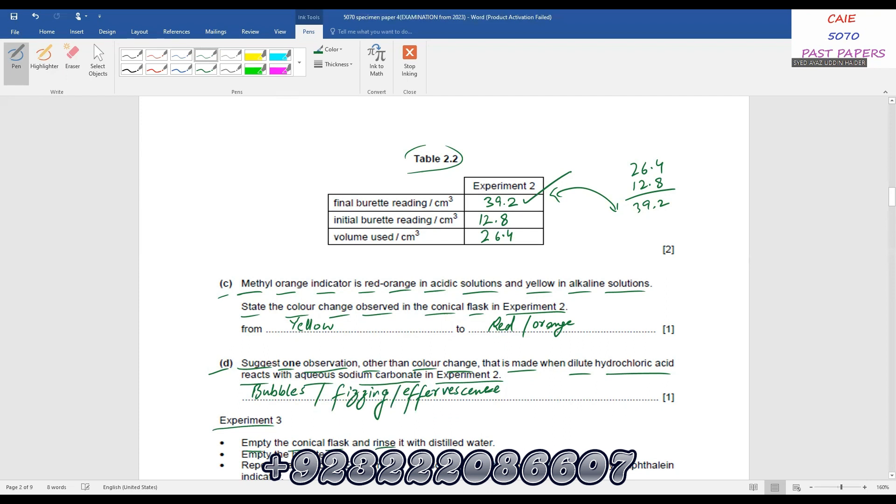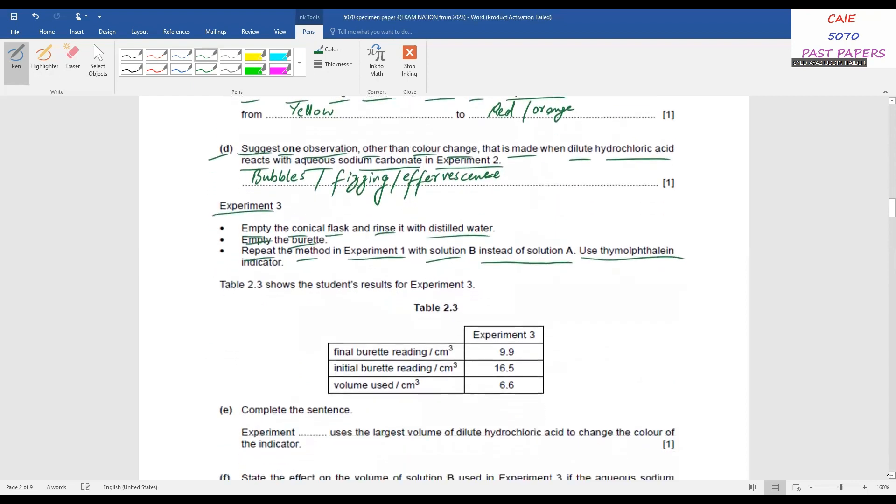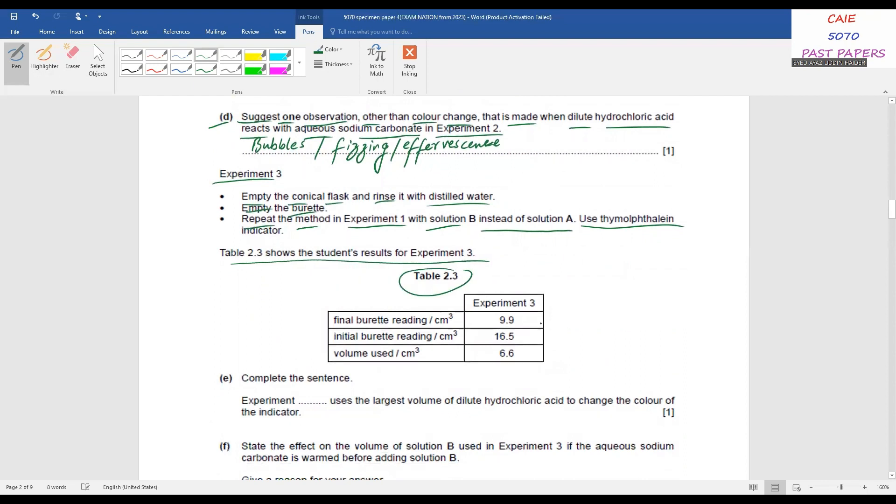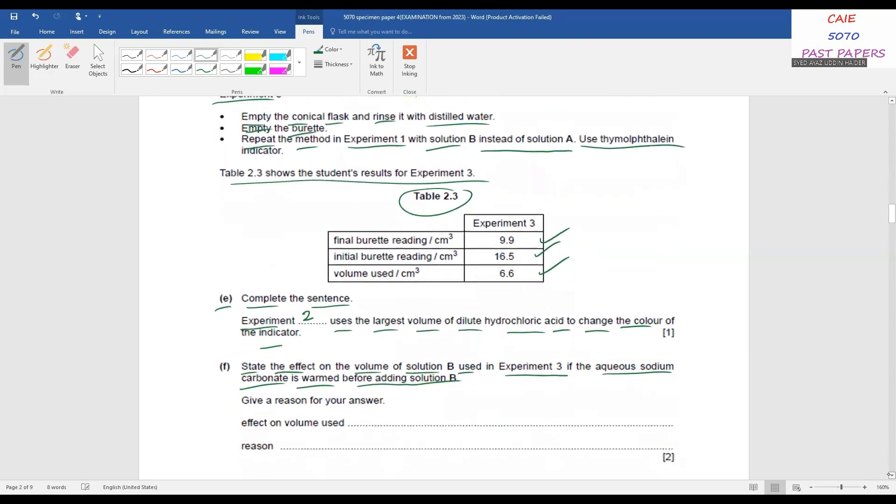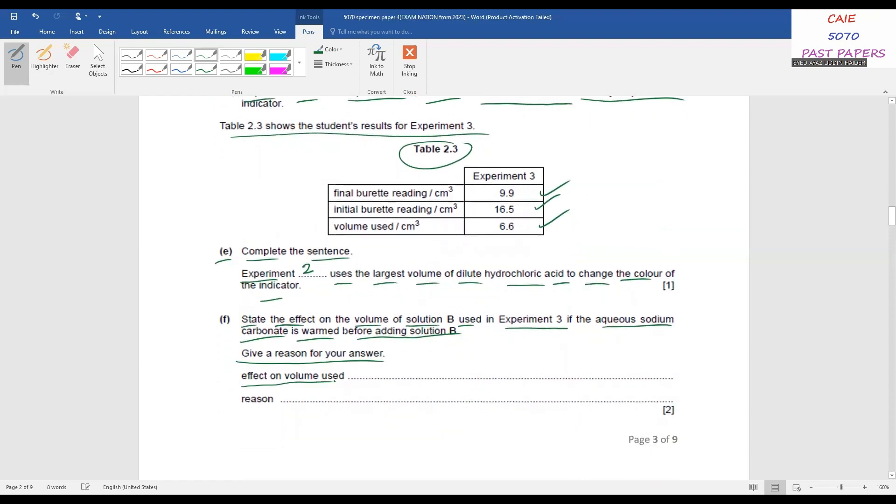Experiment 3: empty the conical flask and rinse it with distilled water, empty the burette, repeat the method in experiment 1 with solution B instead of solution A, use thymolphthalein indicator. Table 2.3 shows the student's results for experiment 3. Here's Table 2.3: final burette reading is 16.5, initial burette reading is 9.9, volume used is 6.6. Part E: Complete the sentence - Experiment 2 uses the largest volume of dilute hydrochloric acid to change the color of the indicator. It's very easy, should write experiment 2. Now state the effect on the volume of solution B used in experiment 3 if the aqueous sodium carbonate is warmed before adding solution B. Give a reason for your answer. So there won't be any change in the volume because the concentration will not change. So you write none here, and the reason will be simply no change in concentration.